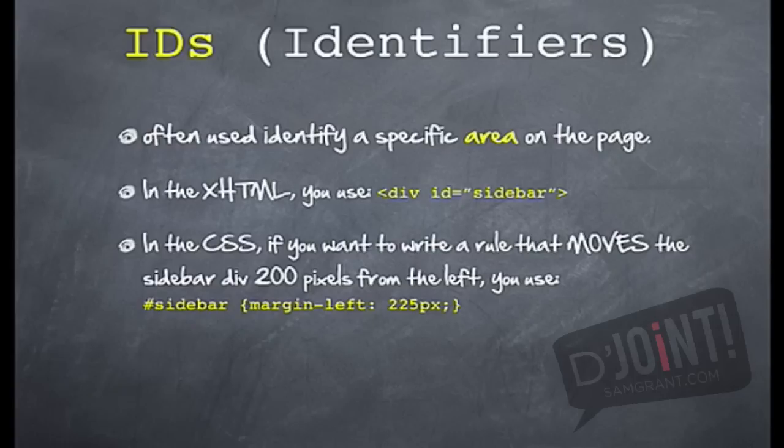This command will take the entire sidebar and give it a margin of 225 pixels from the left. Please make note of the symbol in the beginning, which looks like a pound sign, or some people call it a number sign, but the true term for this is an octothorpe.